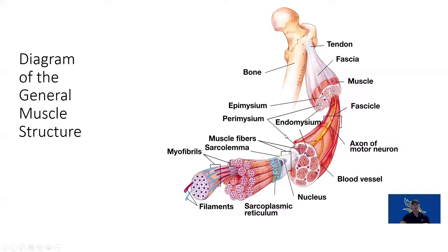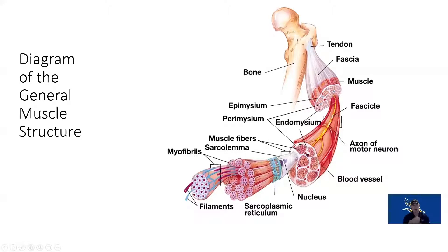The epimysium covers the entire muscle belly, the perimysium covers the fascicle, and then the endomysium is around the muscle fibers. The endomysium goes a little bit further down to cover and connect all of those muscle fibers together.